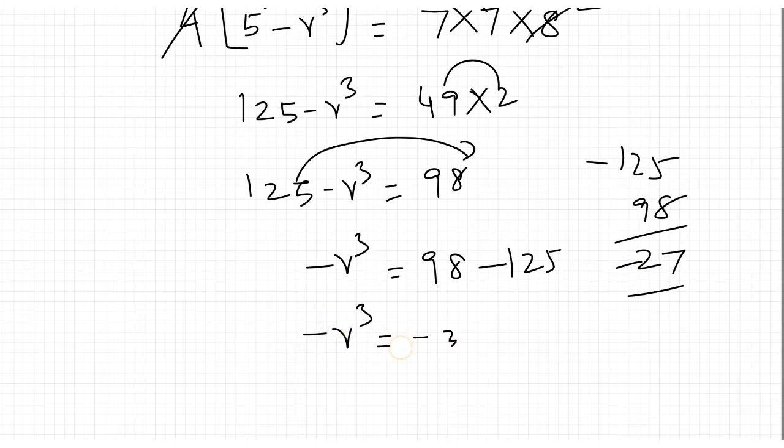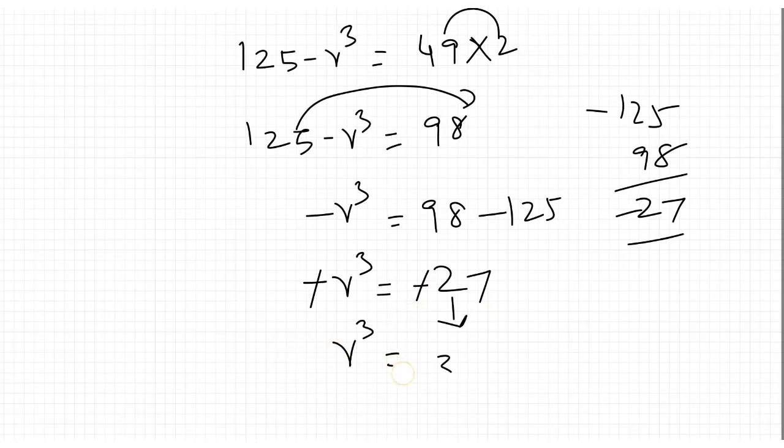Minus r cube equals minus 27. Minus and minus cancel, so r cube equals 27. 27 is 3 cube, so taking cube root: r equals 3 cm.